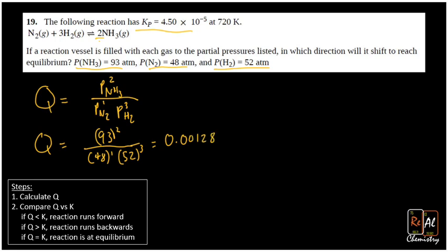So 0.00128. Again, thinking about our start and finish line, here our start is 0, and our finish is 4.5 × 10⁻⁵, pretty small number. This, by the way, is 1.28 × 10⁻³.